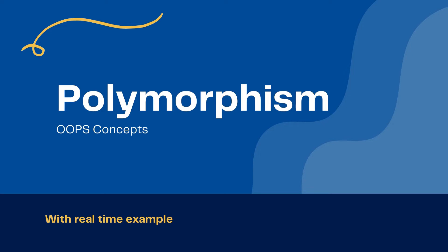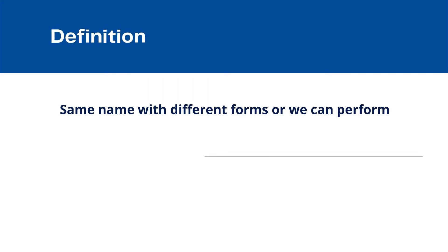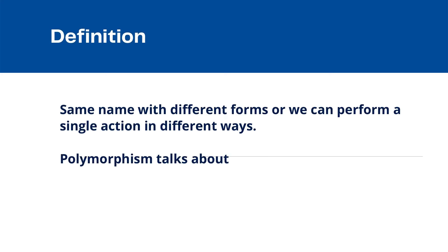The definition of polymorphism: 'poly' means many, 'morph' means form — so polymorphism means multiple forms. A single action can be performed in multiple or different ways. For example, I am Amita Singh — I'm a daughter, I'm a sister, I'm an employee, I'm a YouTuber. I need to perform different roles but I'm a single person. So polymorphism means we can perform a single action in different ways. The whole idea of polymorphism came to achieve flexibility.